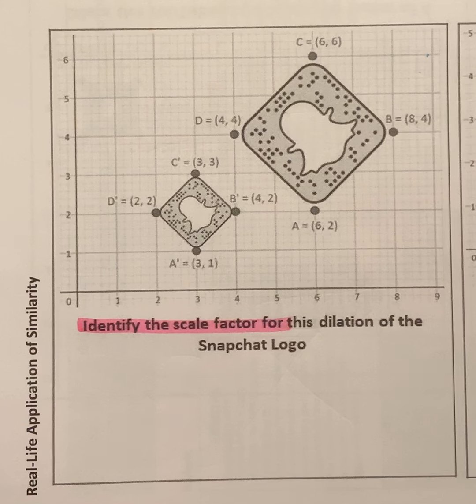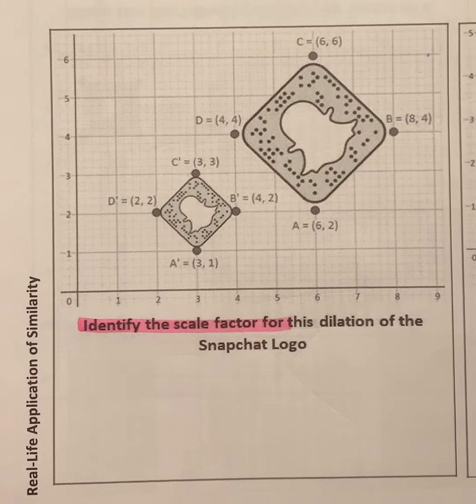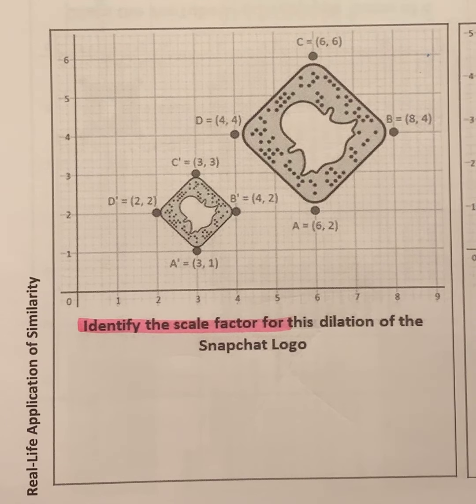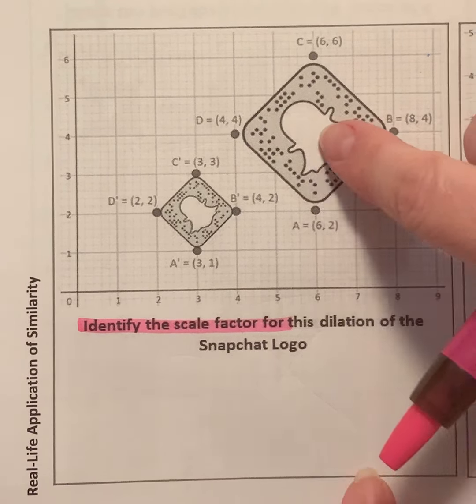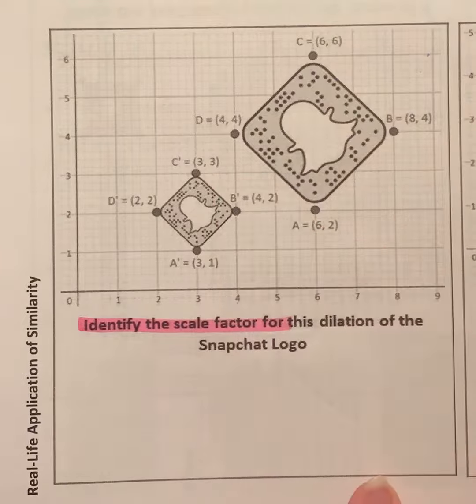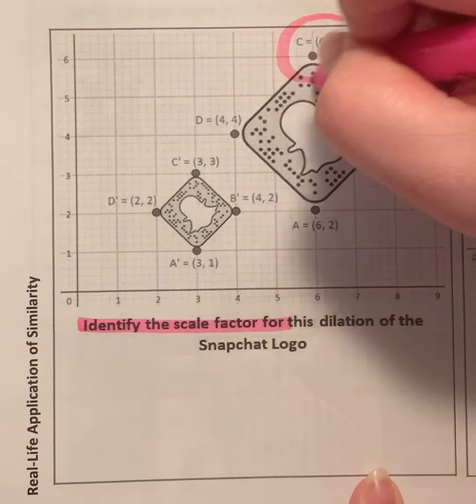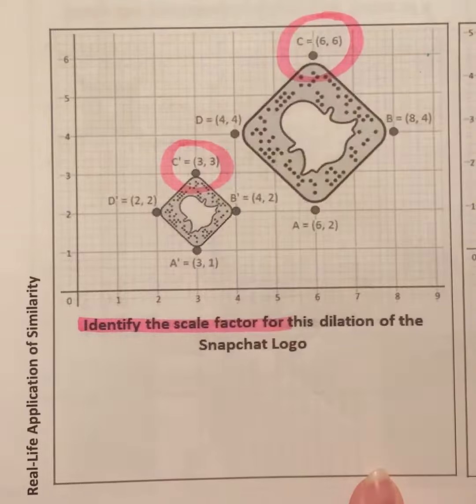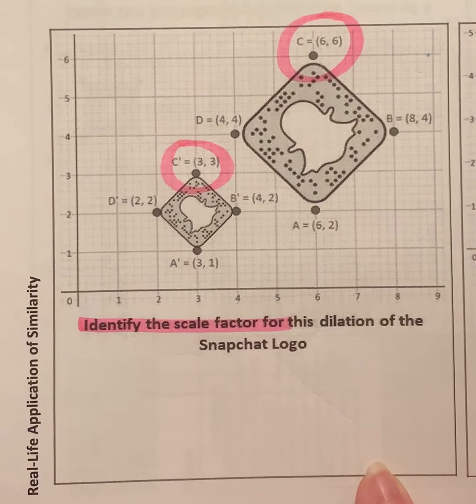So now, the only thing we need to figure out is which one is the original and which one is after the dilation. So did this figure get from big to small or small to big? And the key for that is actually right here in the way that those points are labeled.